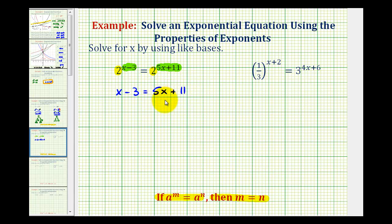Now we just need to solve this equation for x. We need to get x on one side of the equation, so we can either subtract x on both sides or subtract 5x on both sides. Let's subtract x on both sides. This will give us negative 3 equals 4x plus 11. We'll subtract 11 on both sides. We have negative 14 equals 4x.